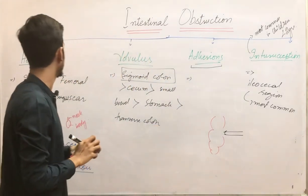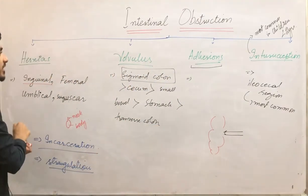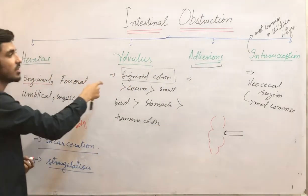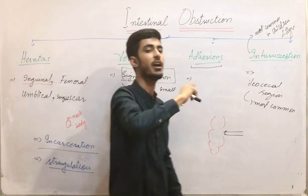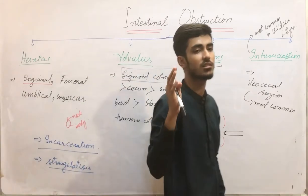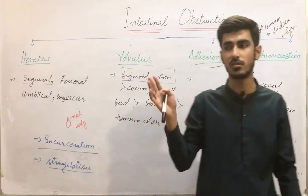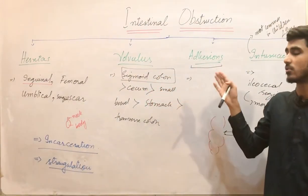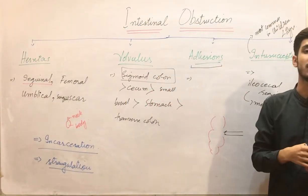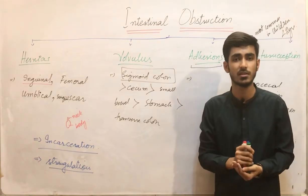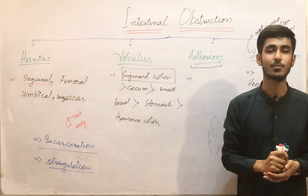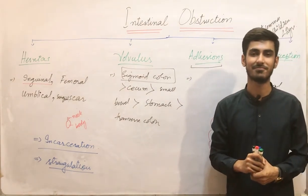So these are the four causes: hernias, volvulus, adhesions, and intussusception. I have also told you the clinical features of intestinal obstruction. If you have any query or confusion, you can ask in the comment section. Thank you so much. Allah Hafiz.